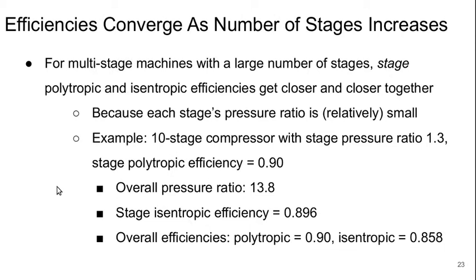The efficiencies will converge as the number of stages increases. If I've got a multi-stage machine with a large number of stages, the staged polytropic and isentropic efficiencies get closer and closer together because each stage's pressure ratio becomes relatively small. For example, a 10-stage compressor with a staged pressure ratio of 1.3 and a staged polytropic efficiency of 0.9 gives an overall pressure ratio of 13.8 and a staged isentropic efficiency of 0.896—almost the same as the polytropic efficiency. But the overall efficiencies are quite different: polytropic is still 0.9, whereas the overall isentropic efficiency is about 0.86, a 4% difference. So it does matter which one you consider.